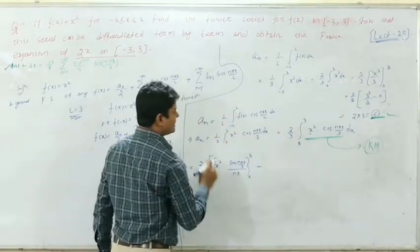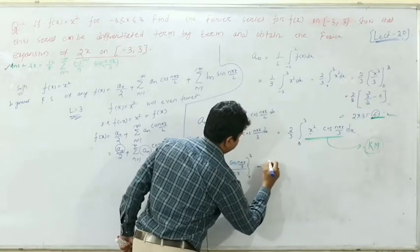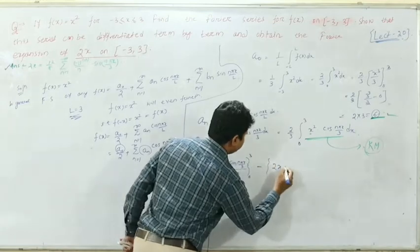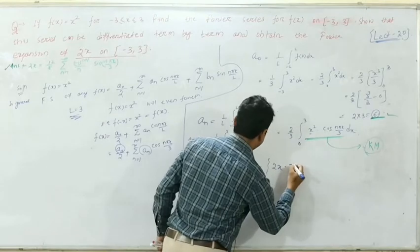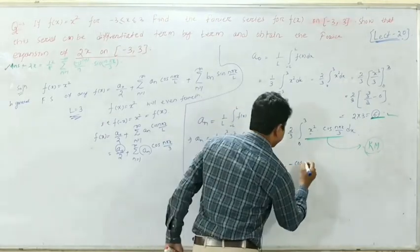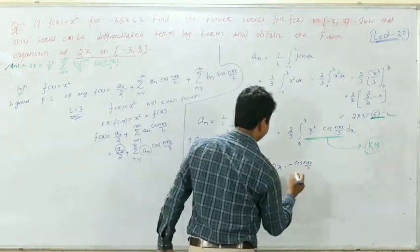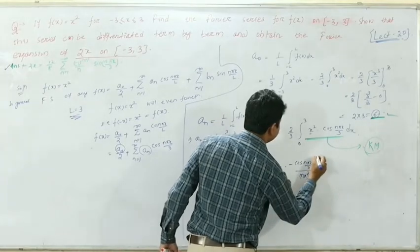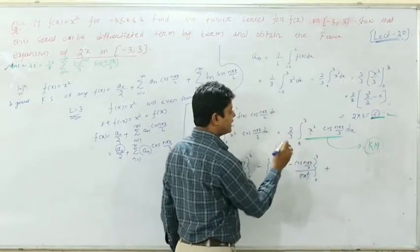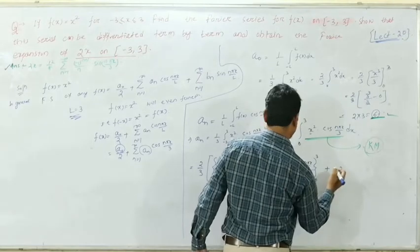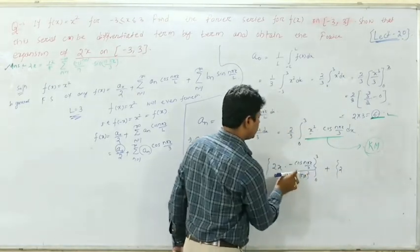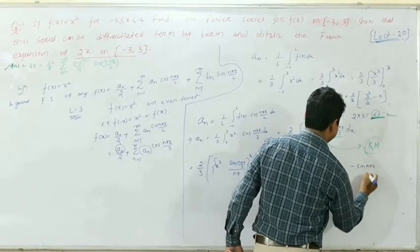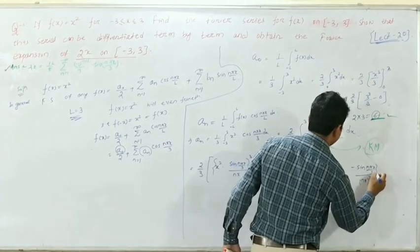Then minus g'(x) times the integral of the integral of φ(x): g'(x) = 2x, and integrating again gives [-cos(nπx/3)/(nπ/3)²], from 0 to 3. Then plus g''(x) times the next integral: g''(x) = 2, and integrating gives [-sin(nπx/3)/(nπ/3)³], from 0 to 3.